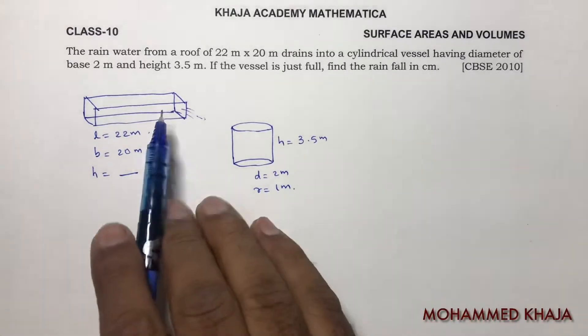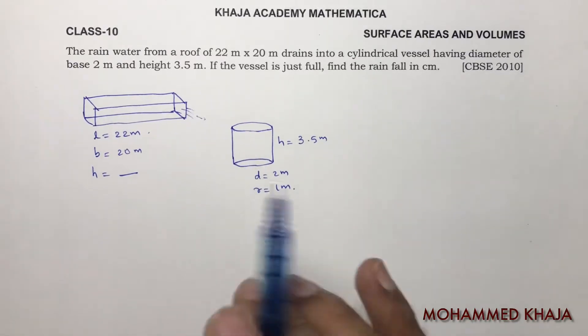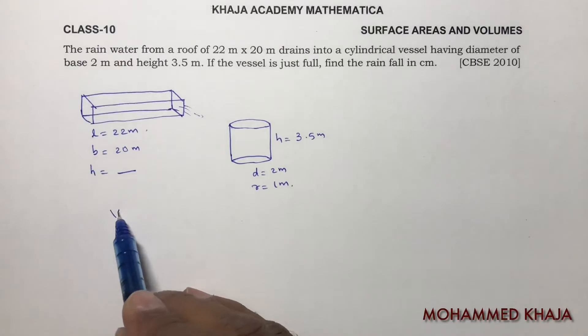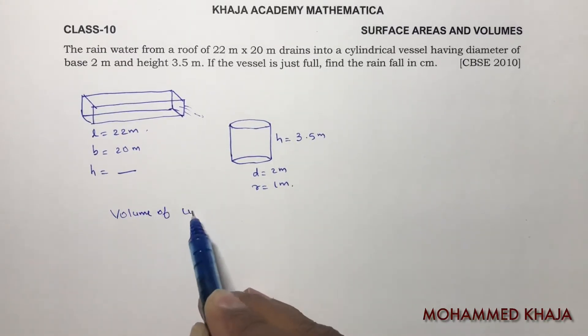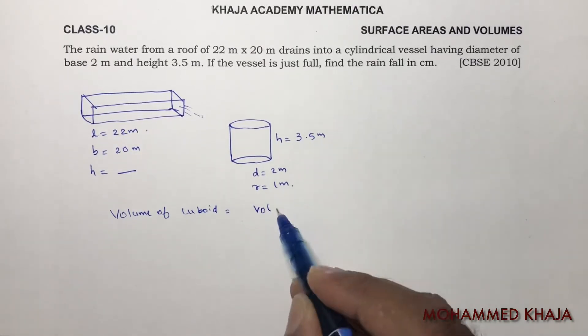This water flows into this and it is completely filled, so both the volumes are equal. Both the volumes are equal, so volume of cuboid equals volume of cylinder.